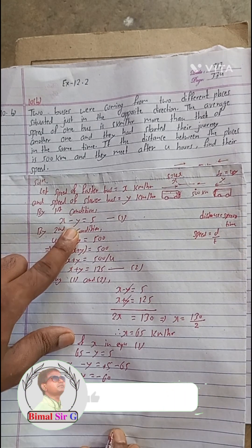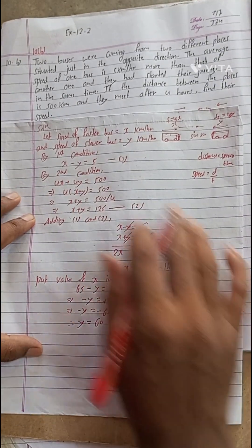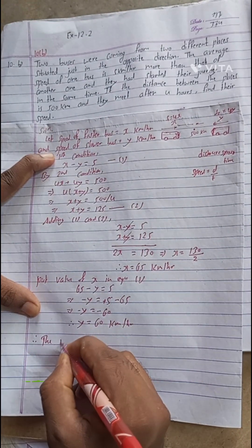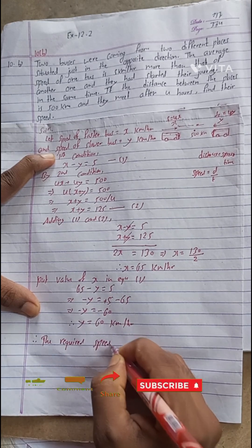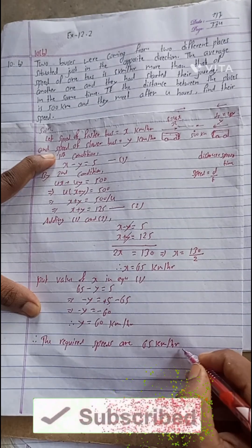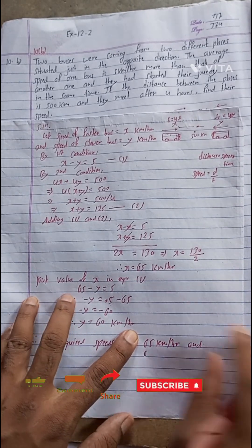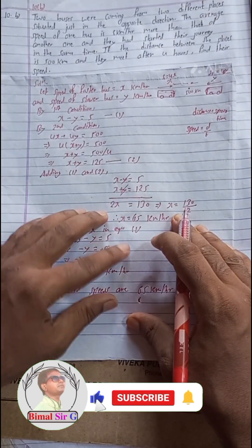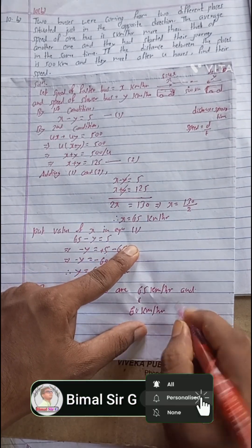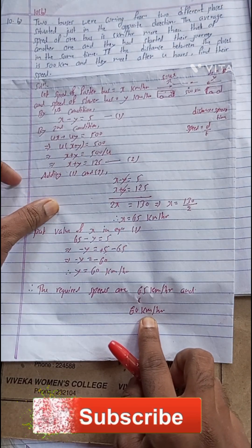Therefore, the required speeds are: the speed of the faster bus is 65 kilometers per hour, and the speed of the slower bus is 60 kilometers per hour. This is the required solution.